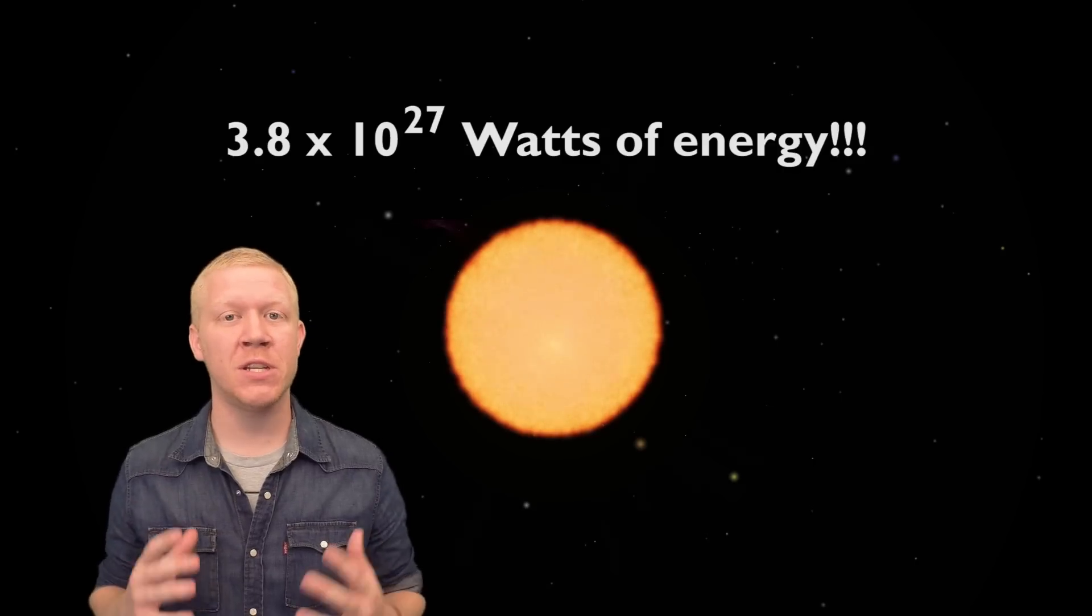The sun is composed mostly of hydrogen and helium, which are the first two elements on the periodic table, and it's powered by nuclear fusion, which takes those hydrogen atoms and fuses them into helium atoms. Every second, 600 million tons of hydrogen is converted into helium. During this process, an enormous amount of energy is produced...